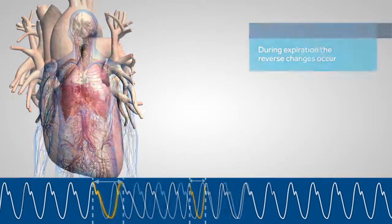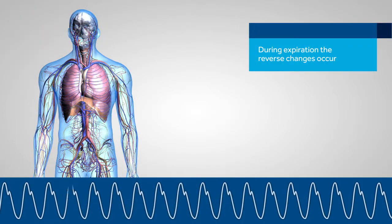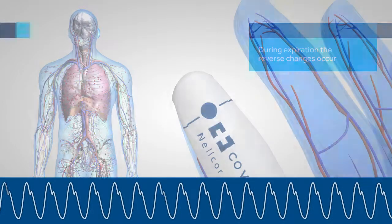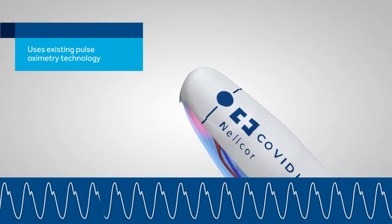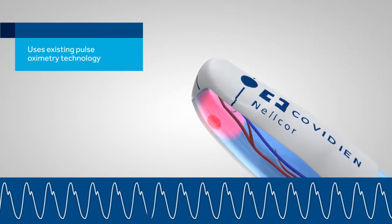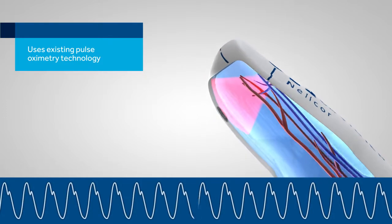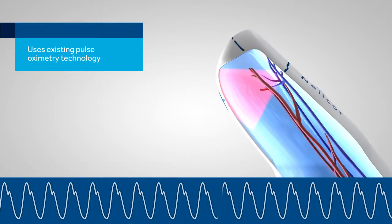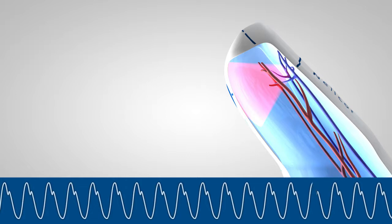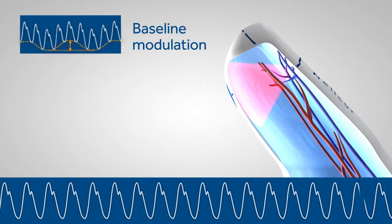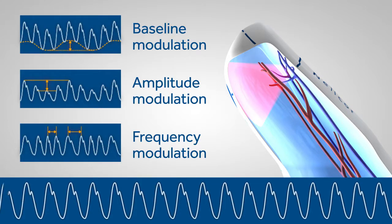During expiration, the reverse physiological and corresponding pleth waveform changes occur. The Nelcore respiration rate algorithm software uses these changes in the pleth waveform to calculate respiration rate with the same sensors and technology used to monitor pulse oximetry. Every five seconds, the algorithm reviews the baseline, amplitude and frequency modulation pleth waveform averages of the previous 45 seconds.